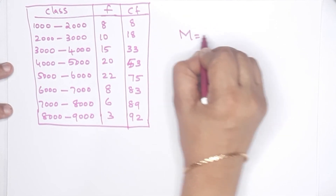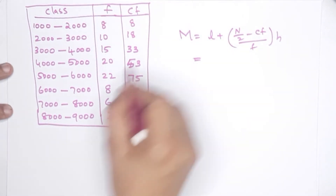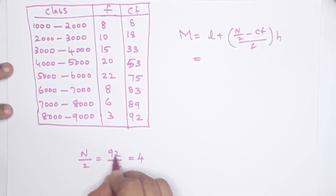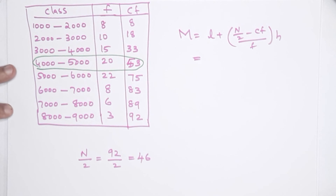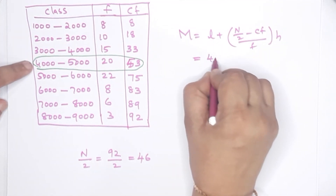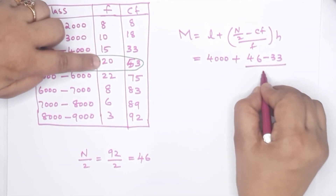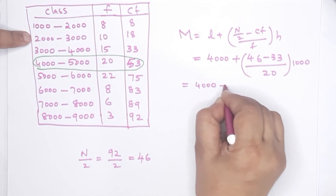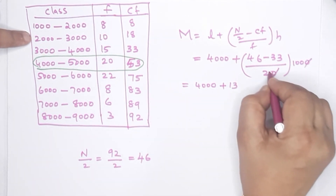Cumulative frequencies are complete. Median formula: L plus N by 2 minus CF by F into H. L is the lower limit of the median class. N by 2 is 92 by 2 equals 46. The 46th item falls in the class 4000 to 5000 — that is the median class. L is 4000, N by 2 is 46, CF is 33, corresponding frequency is 20, class width is 1000. So: 4000 plus (46 minus 33) divided by 20 into 1000, gives the median answer.